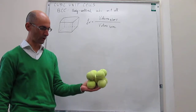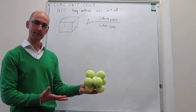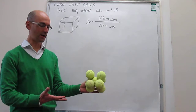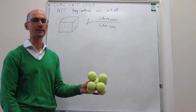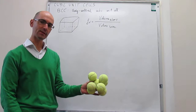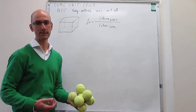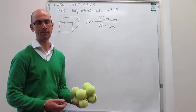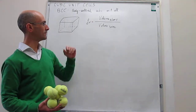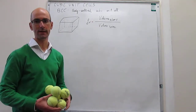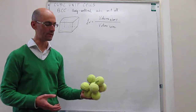What we're going to do here is try to calculate how much of the space in a unit cell — or in the metal, or in the solid — is occupied by atoms, by calculating something we call the packing efficiency, which is simply the ratio of the volume occupied by the atoms over the volume of the unit cell.